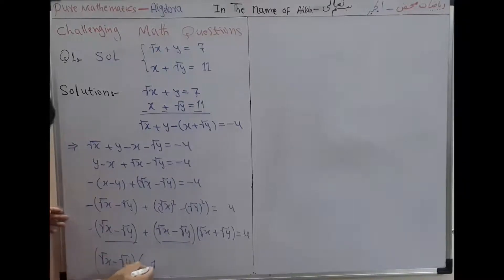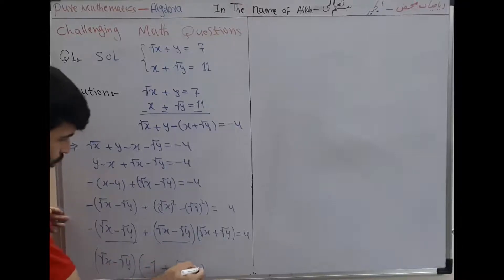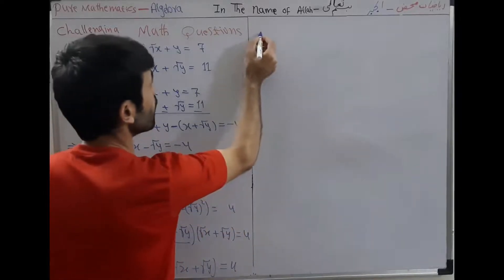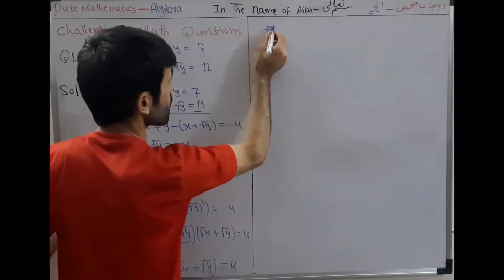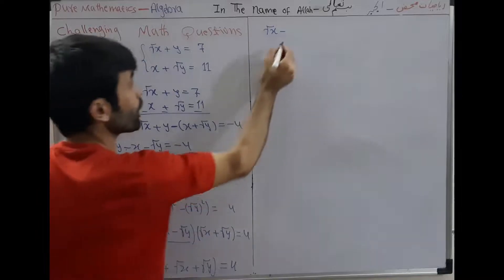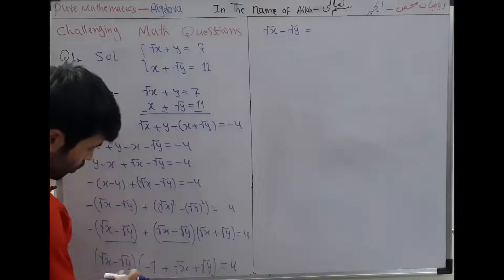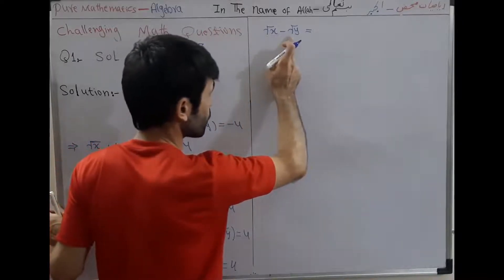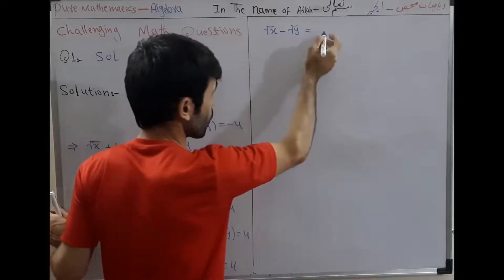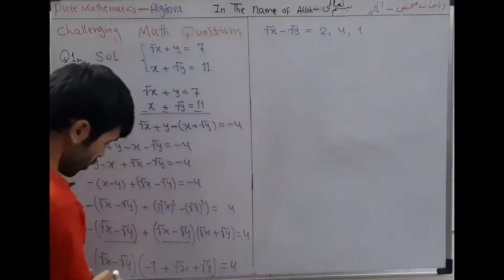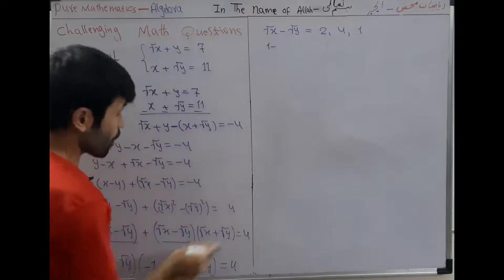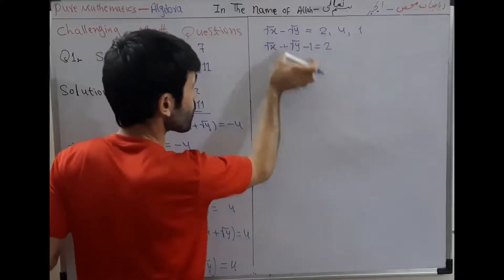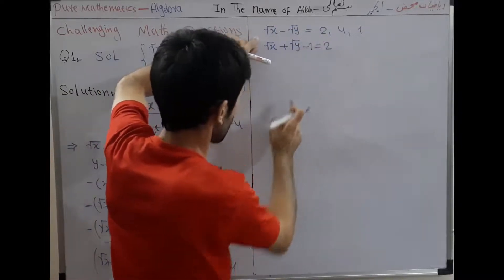Simplifying further, we factor the expression. We have square root of x minus square root of y as a common factor. We consider two factors: the first factor gives square root of x minus square root of y equal to a value, and the second factor gives another equation, so that their product equals 4.